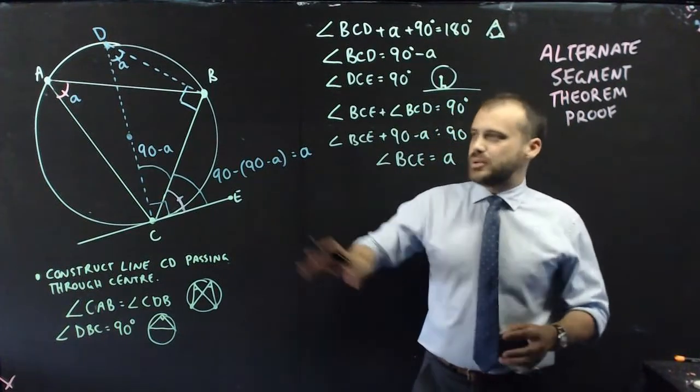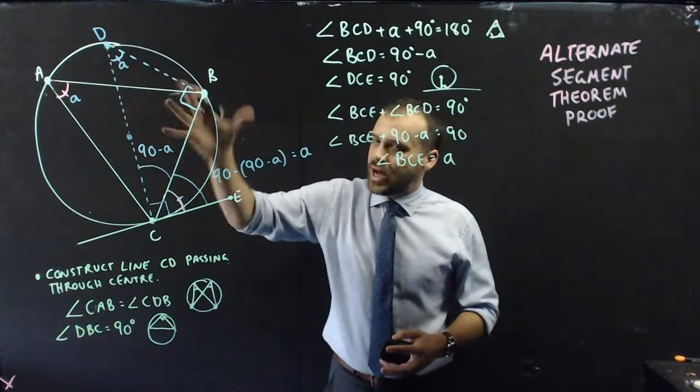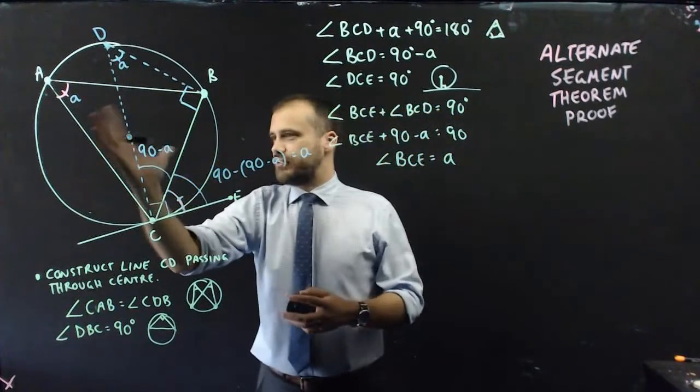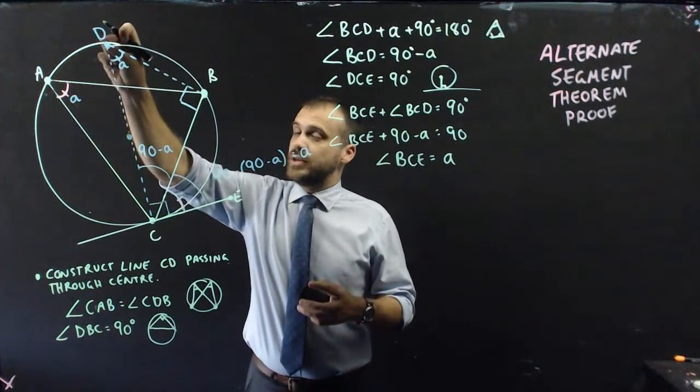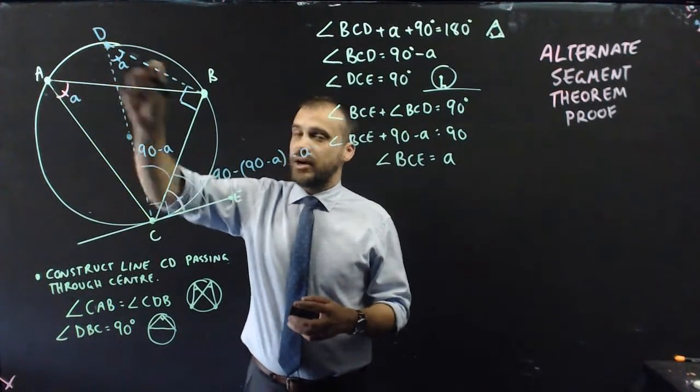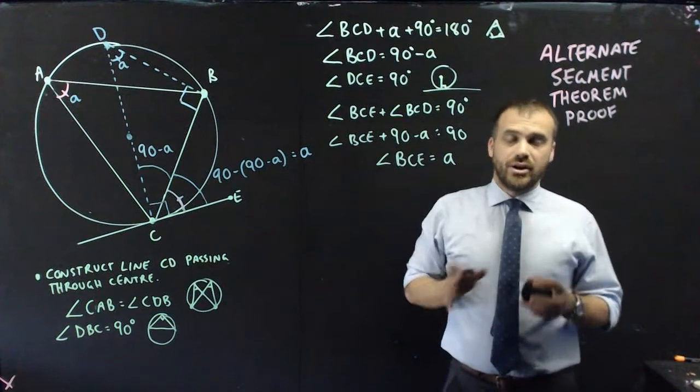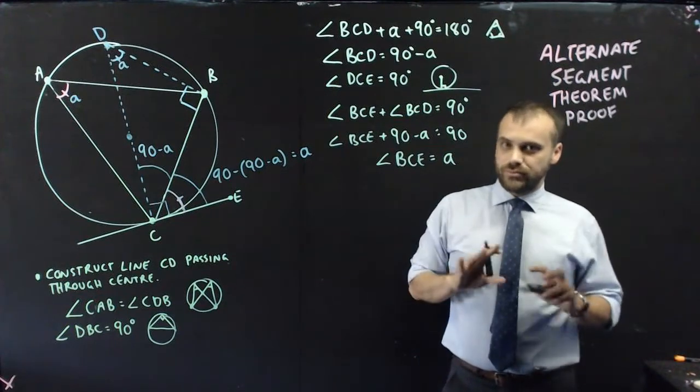It's just a really pretty proof. You can see you don't have to do a lot of work, but you do have to spot that you can drag this dot from there to there and still have our angle be A. Alternate segment theorem proof, beautiful thing.